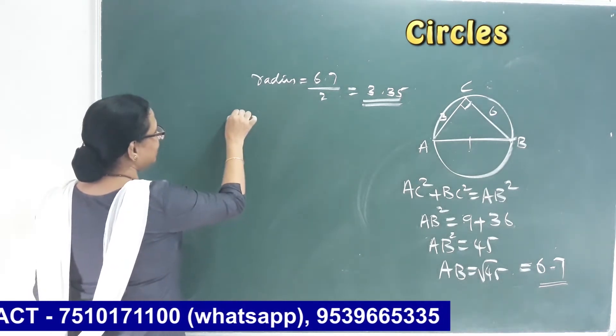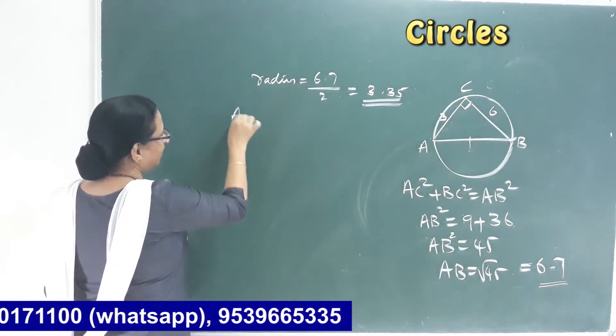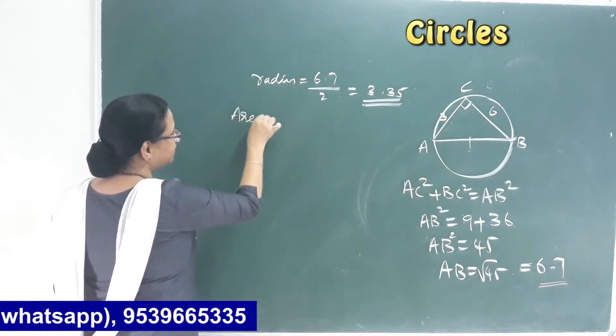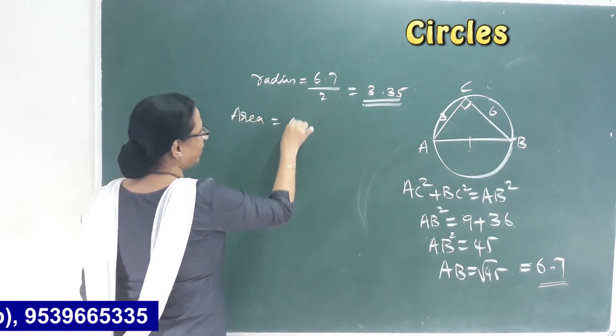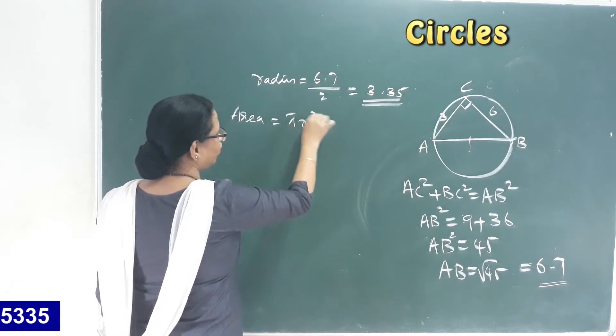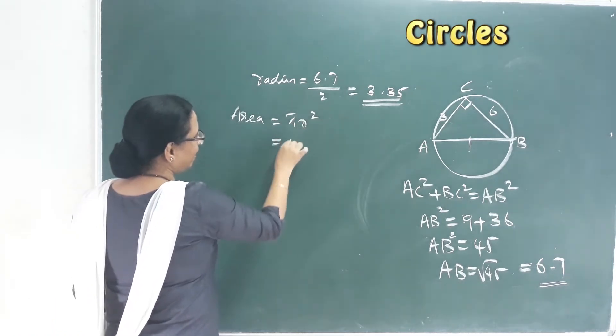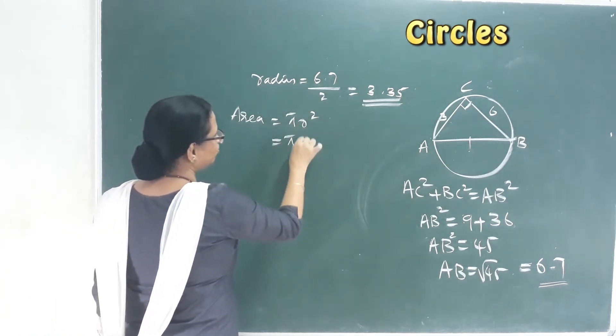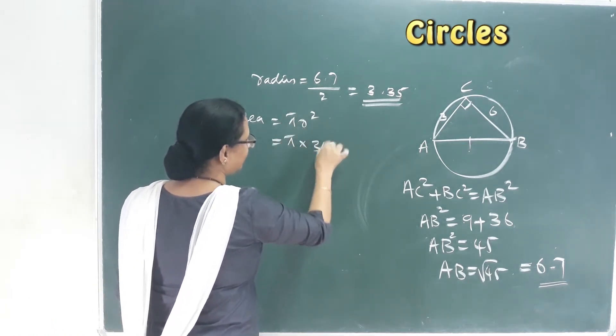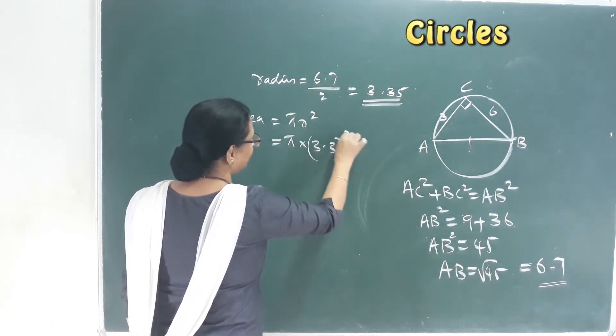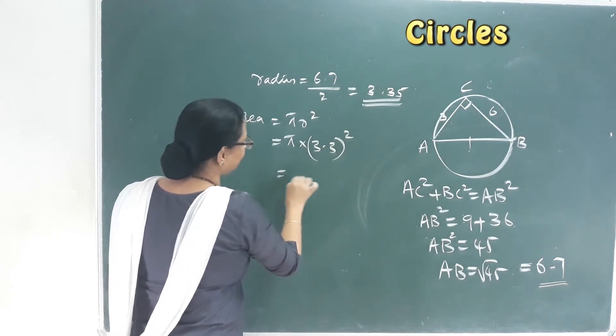That means area. Area is equal to π r². Pi into r, where r is 3.3 squared.